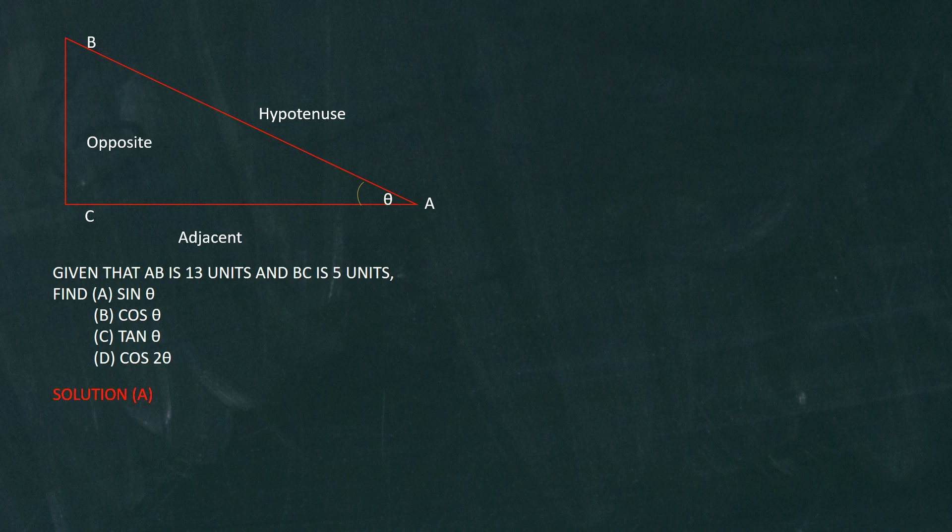If we were given another angle, let's say angle ABC, then the respective opposite and adjacent will be different. The hypotenuse, though, remains always the longer side. Now let us look at a solution for our question. For part A, we are asked to find sine of theta.